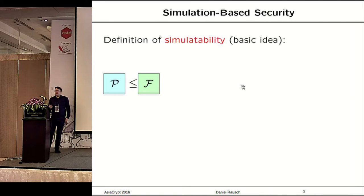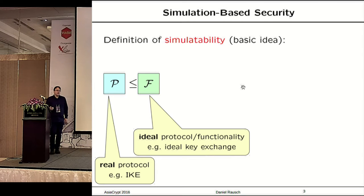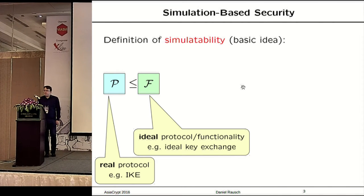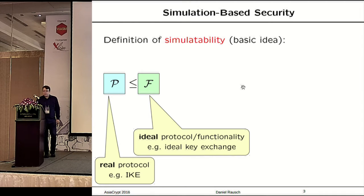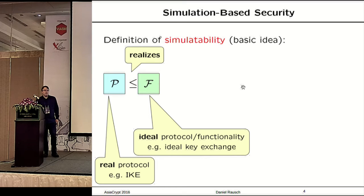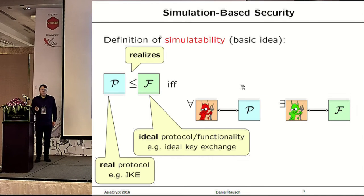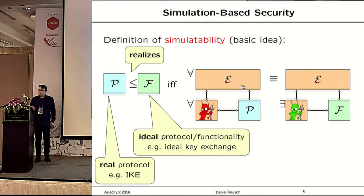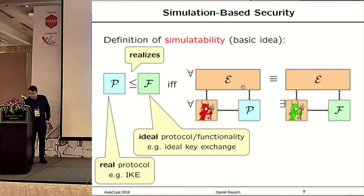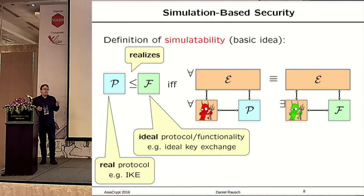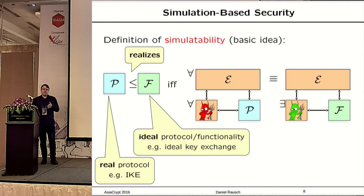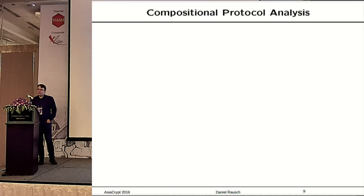Universal Composability Models use simulatability to define security, which works as follows. We have a real protocol P which we want to analyze, and an ideal protocol or ideal functionality which perfectly defines some task in a secure way — for example, an ideal functionality for key exchanges. P realizes this functionality if for all adversaries attacking P on the network, we can find a simulator attacking F such that no environment can distinguish both settings. In other words, attacking P is equivalent to attacking F. The main feature of these models is their modularity, which allows for reusing security results.